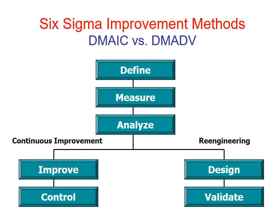This figure represents DMAIC versus DMADV — Six Sigma improvement methods. The two approaches share the Define, Measure, and Analyze phases. Then DMAIC continues with Improve and Control for continuous improvement, while DMADV continues with Design and Validate for re-engineering new processes.